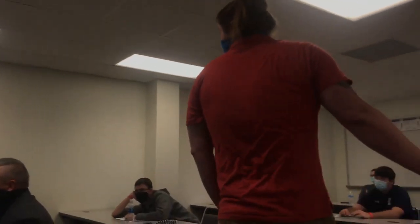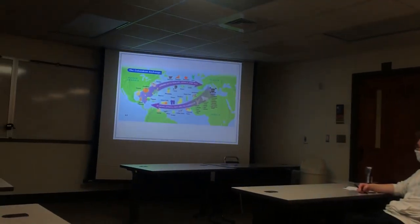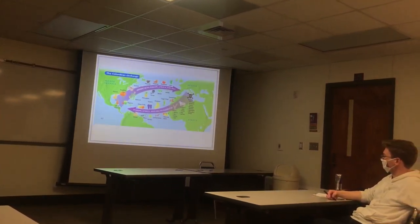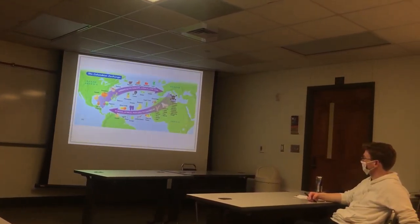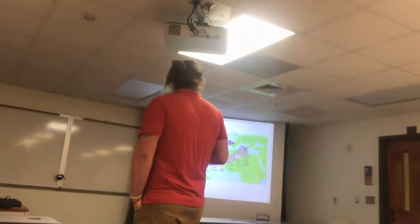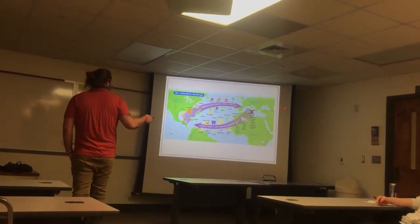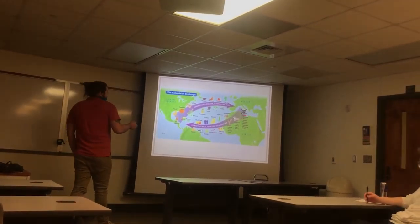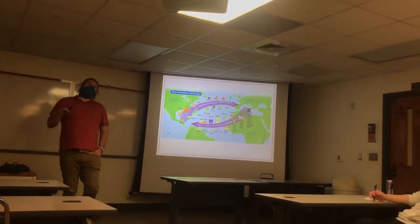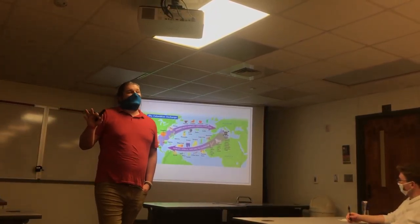So here's a map of the Columbian Exchange — tomatoes, corn, squash, pumpkins moving over to Europe and spreading into Africa and Asia. And livestock, some other fruits, and of course the big one: disease moving from the Old World to the New World. Something not on this map is the later movement of people — both Europeans and African slaves — once the encomienda system is phased out.